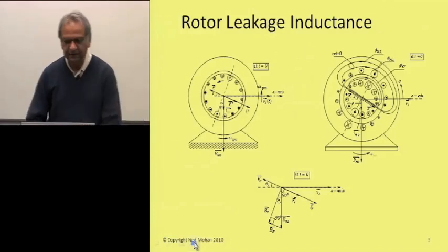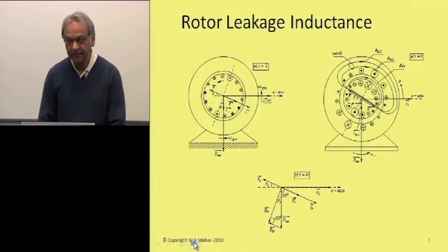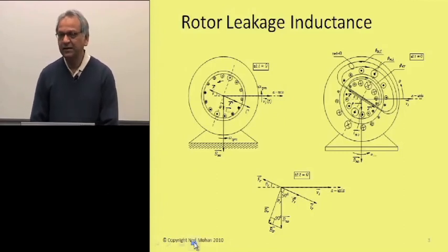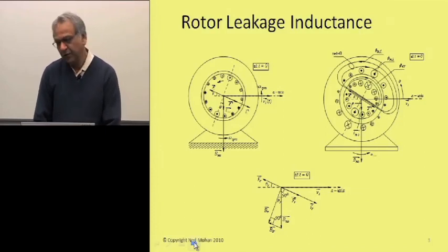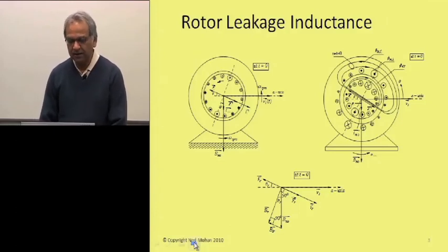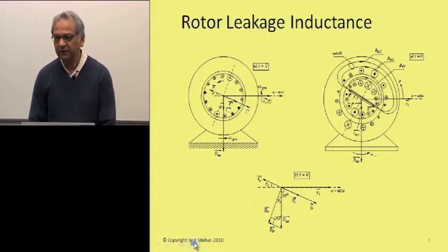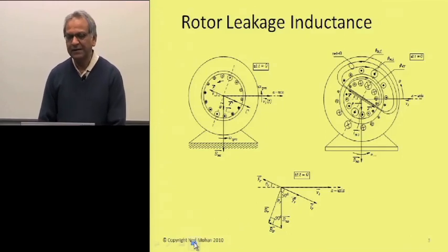Now let's look at the effect of including the rotor leakage inductance. It is always there, but initially in our discussion we had neglected it, and it's acceptable to neglect it when the slip speed is very small. In general, however, they cannot be neglected, and if you want to do very precise control, then rotor leakage inductances ought to be taken into account.